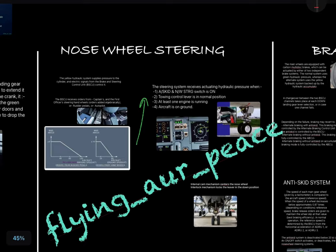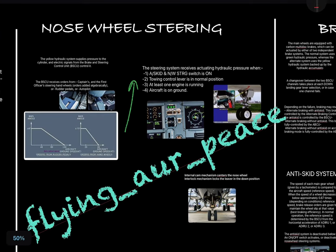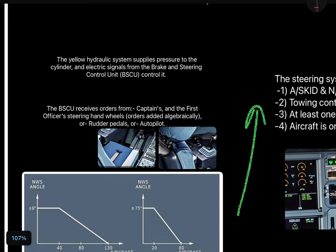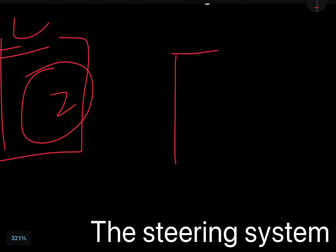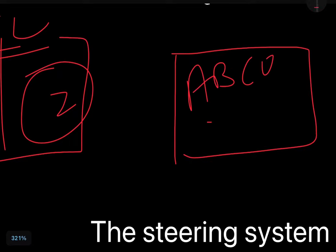Steering is only available on the nose wheel of the A320. The yellow hydraulic system supplies pressure to the steering cylinder, and the electrical signal comes from the BSCU — the Brake and Steering Control Unit. There are two channels of BSCU. So nose wheel steering is controlled by the yellow hydraulic system and the BSCU. There is also one more controller called the ABCU — Alternate Braking Control Unit — which we will discuss further.